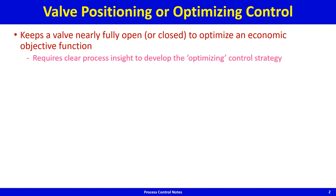What is the economic objective function and why is near fully open or closed valve operation economically optimal? This requires clear process insights, and only through these clear process insights does one know the economically best way of running the process. Once you know that, the optimizing control strategy falls out of that understanding — process understanding is key.